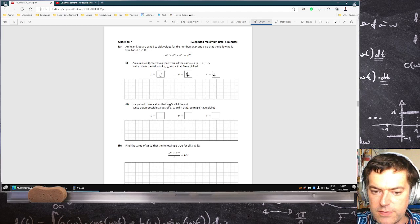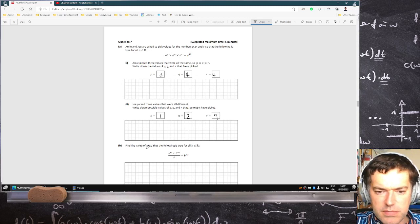Joe picked three values that were all different. Write down possible values of P, Q, and R that he could have picked. I guess he could have gone with like 1, 2, and 9. That's it.